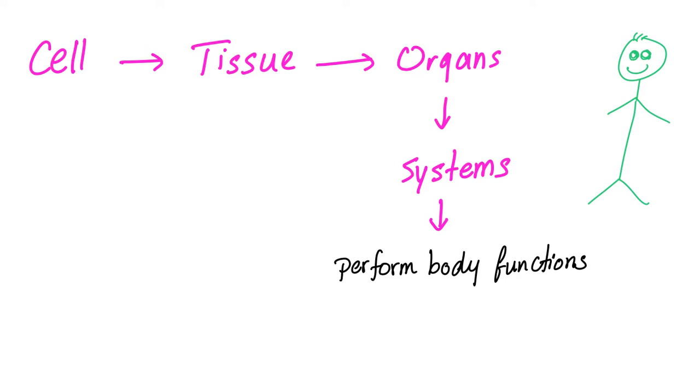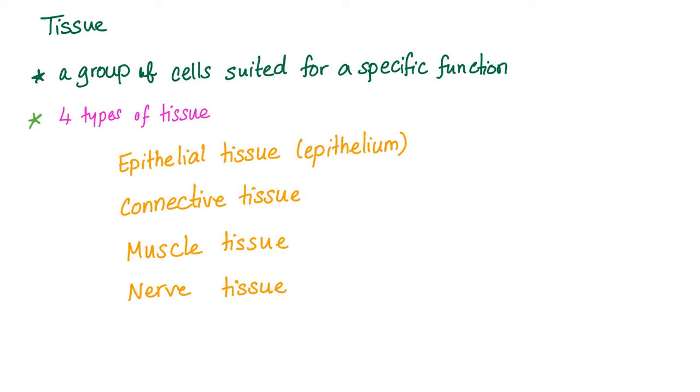I've told you like a gazillion times before that a group of cells form a tissue. Group of tissues form an organ. Group of organs form systems. And these systems will perform body functions. So, a tissue is a group of cells suited for a specific function, and we have four types of tissue.